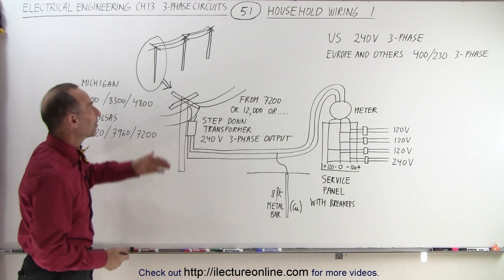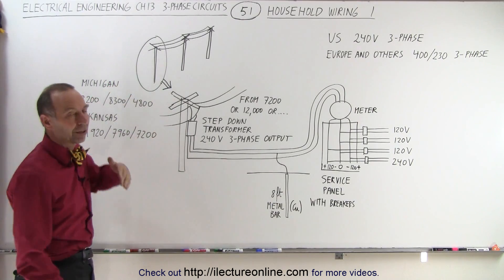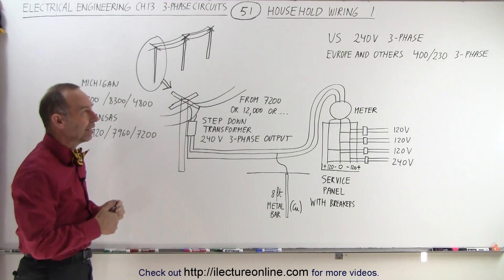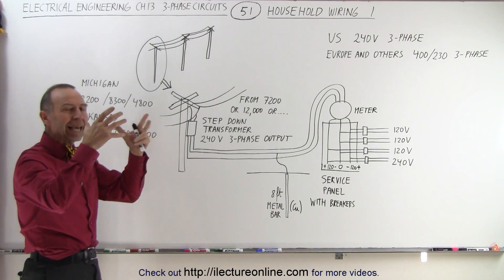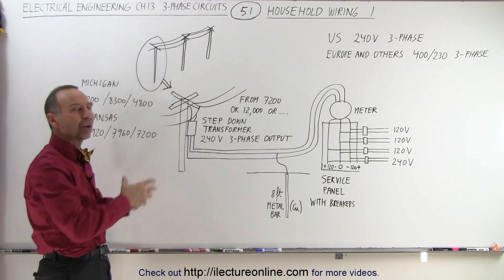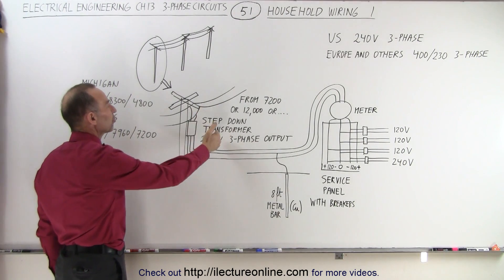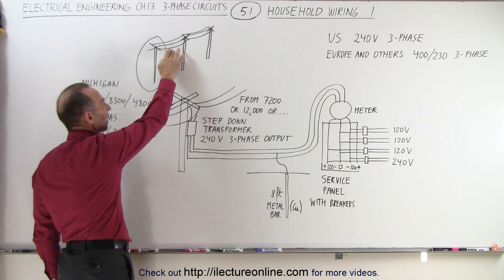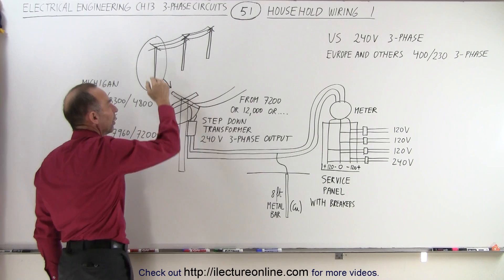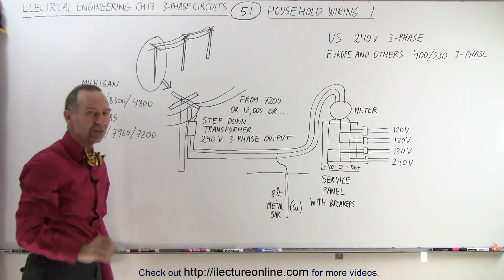All of us have probably seen the power poles outside our house with the wires, and every once in a while there's a canister-looking thing attached to one of those poles. That's typically a transformer, a step-down transformer that takes the voltage from the lines outside your house on the power poles down to the voltage that we can use inside the house.